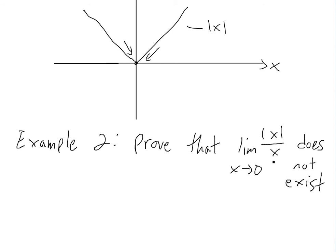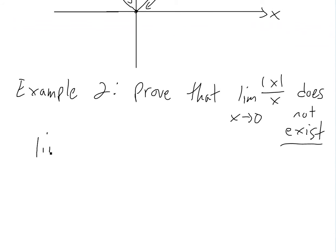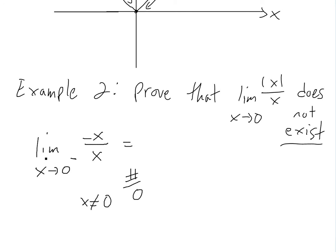Example two says: prove that the limit of absolute value of x divided by x as x approaches zero does not exist. We do the same thing — break it into two functions. From the left side, absolute value of x becomes negative x, divided by x. Since x is not equal to zero in this limit, we can cancel, and we get negative one.